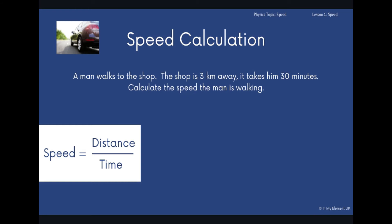Another example. Man walks to the shop. The shop is three kilometers away, and it takes him 30 minutes. Calculate the speed the man is walking. Now, pay attention here. When we talked earlier, we talked about kilometers per hour. It's not in hours. It's in minutes.